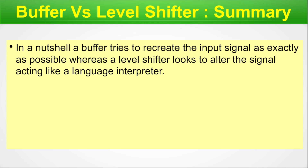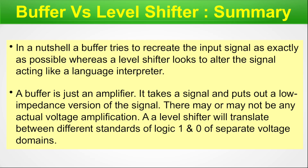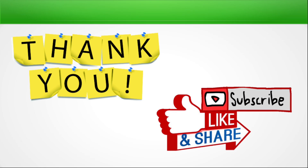Buffer versus level shifter summary. In a nutshell, a buffer tries to recreate the input signal as exactly as possible, whereas a level shifter looks to alter the signal, acting like a language interpreter. A buffer is just an amplifier — it takes a signal and puts out a low-impedance version; there may or may not be actual voltage amplification. A level shifter will translate between different standards of logic 1 and logic 0 across separate voltage domains. Thank you very much for watching, and don't forget to like, share, and subscribe. If you have dislikes, put them in words in the comment section below.